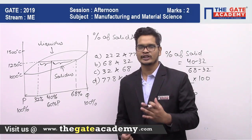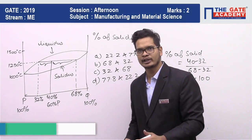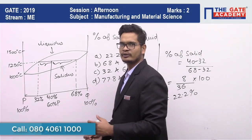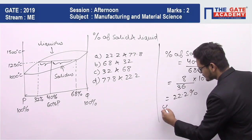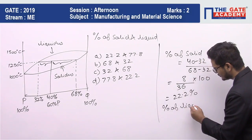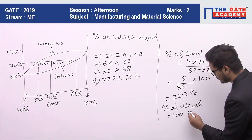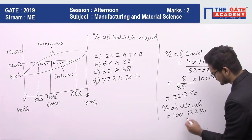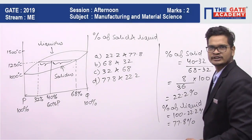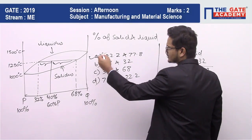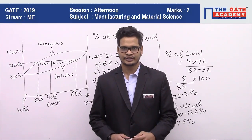When the percentage of solid is 22.2 percent, the percentage of liquid automatically becomes 100 minus 22.2, which is 77.8 percent. This gives us option A as the answer. Hope you liked the video — please share this with your friends, thank you.